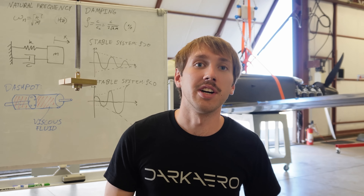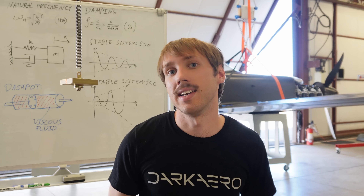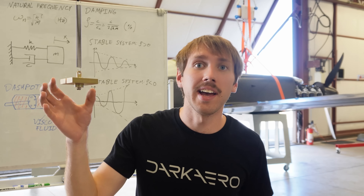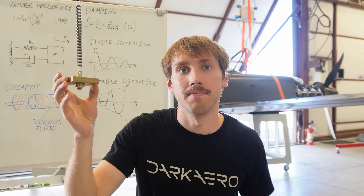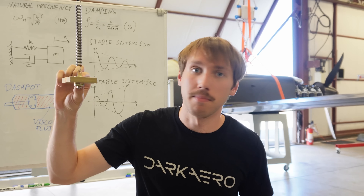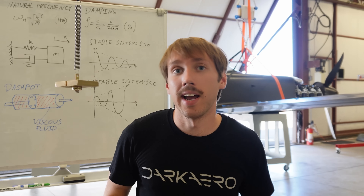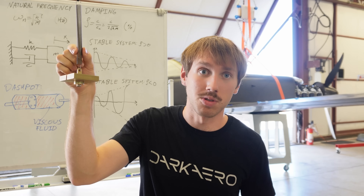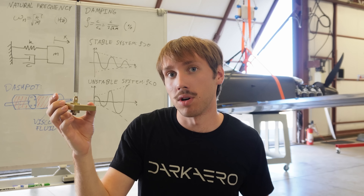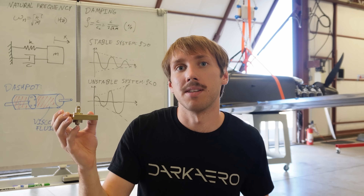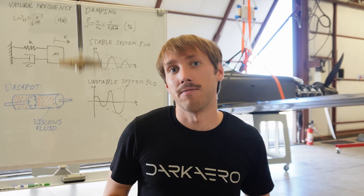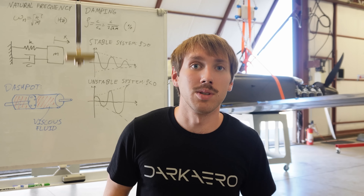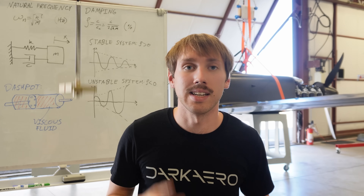To understand flutter and aeroelasticity, the fundamental building block is a mass-spring-dashpot model. Here I have a mass attached to a spring to visualize the system. The mass of a structure can be represented by a discrete lump mass like this metal block. Stiffness, on the other hand, can be modeled as a mechanical spring, and this represents how much a structure deforms due to applied forces. If I pull this mass-spring system and let go, the mass will oscillate back and forth. The rate of oscillation is called the natural frequency of the system. Every vibratory structure will have some natural frequency based on its mass and stiffness.